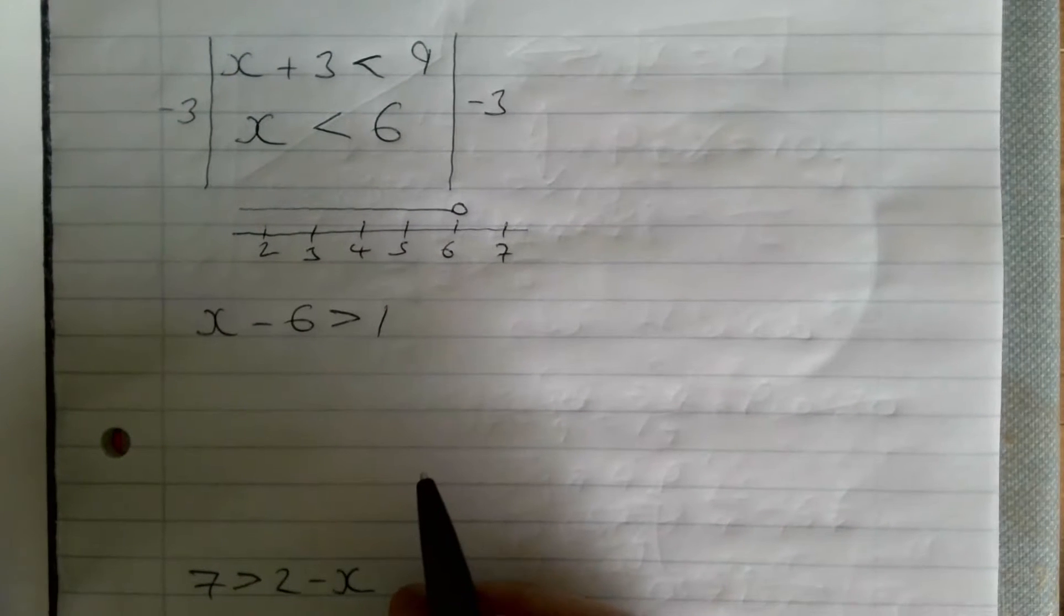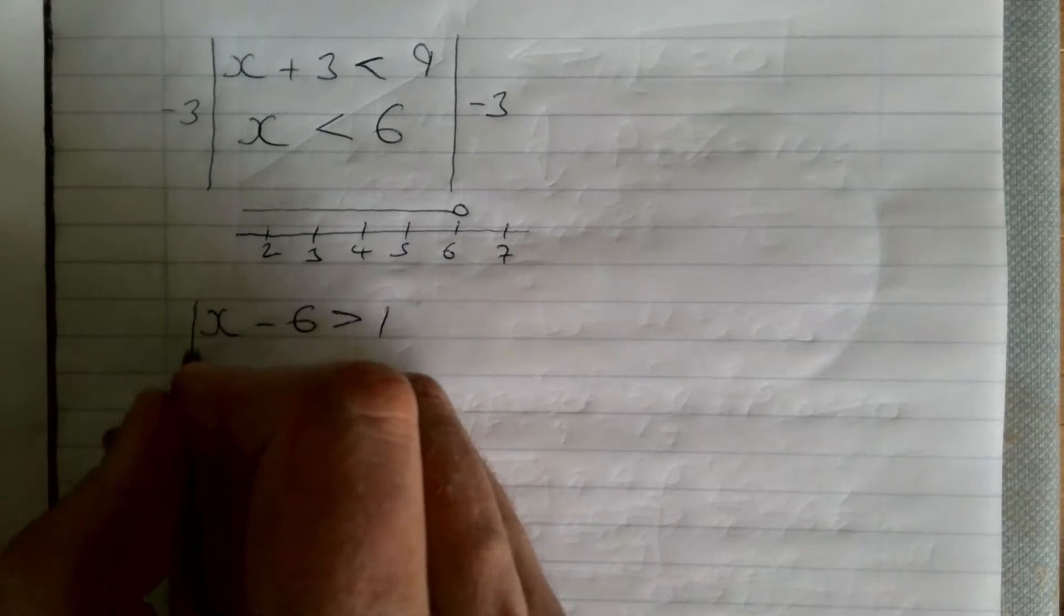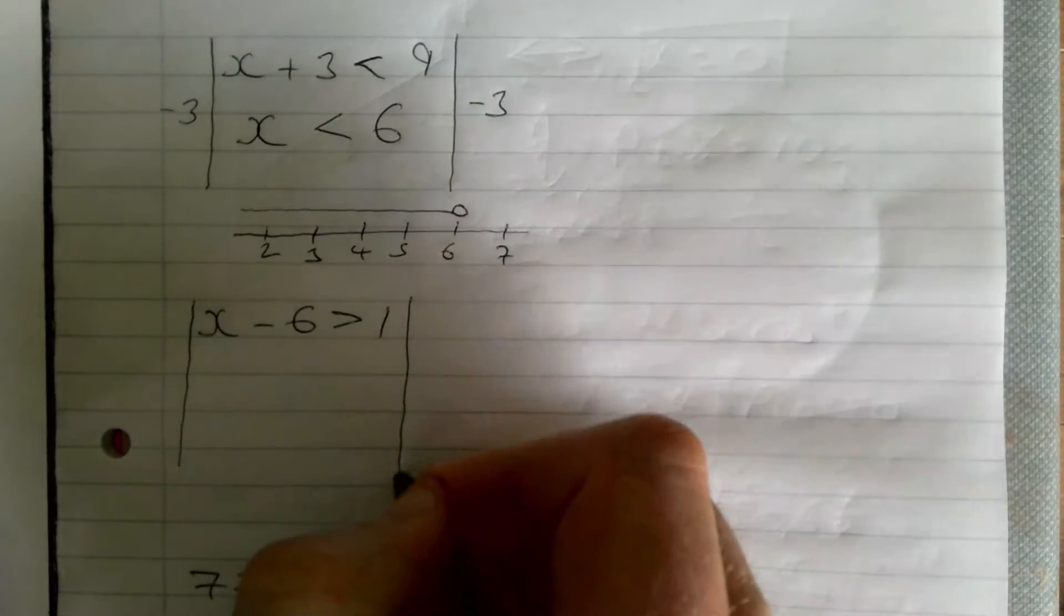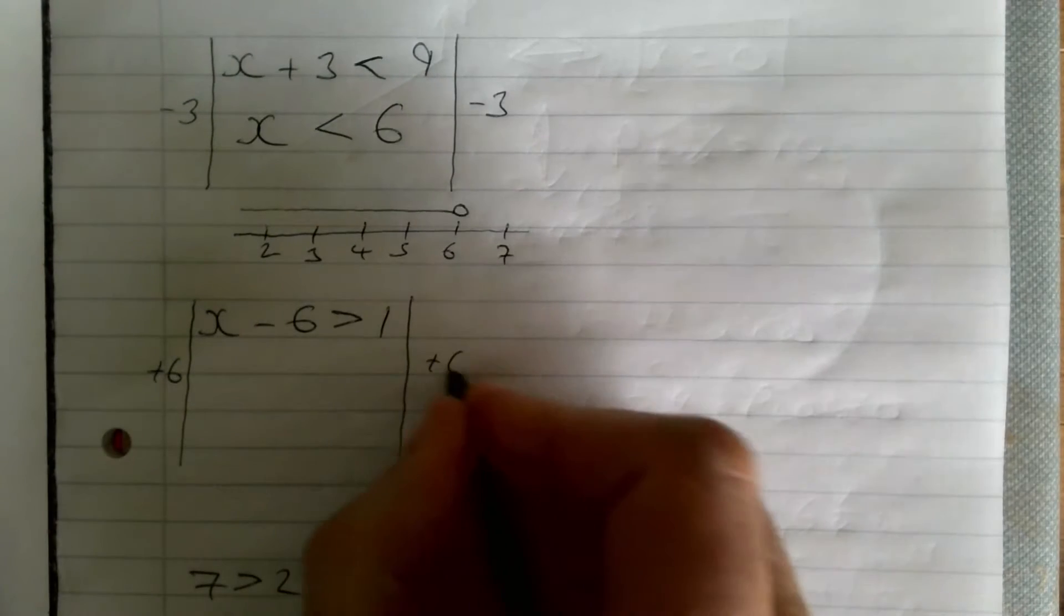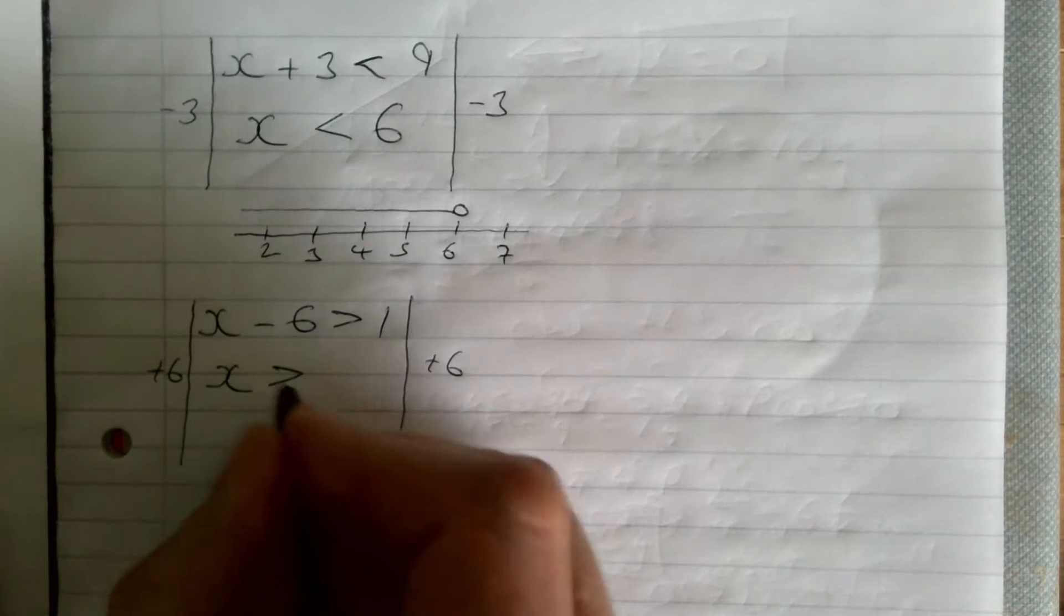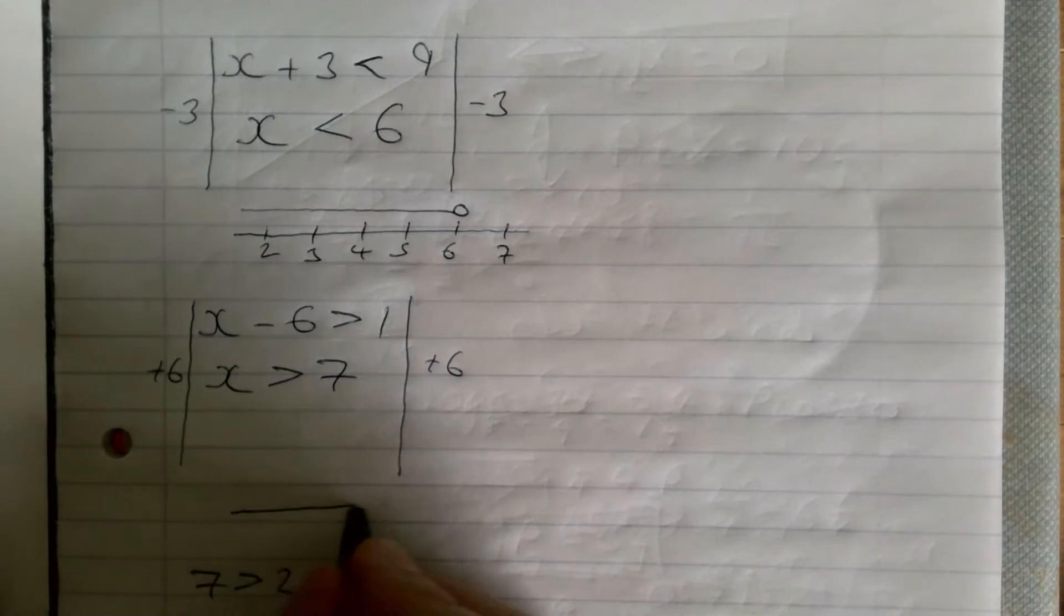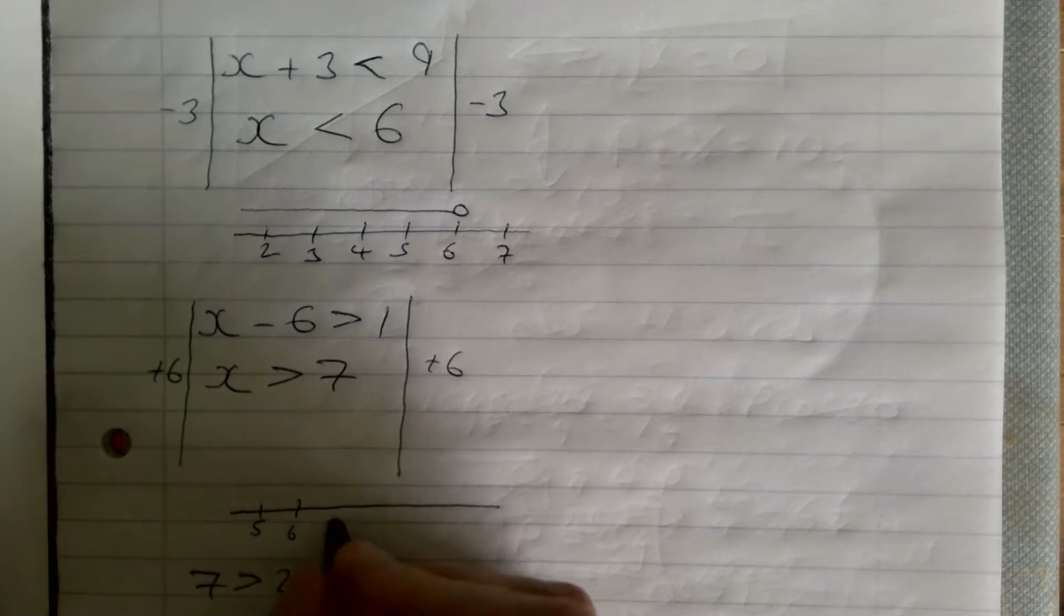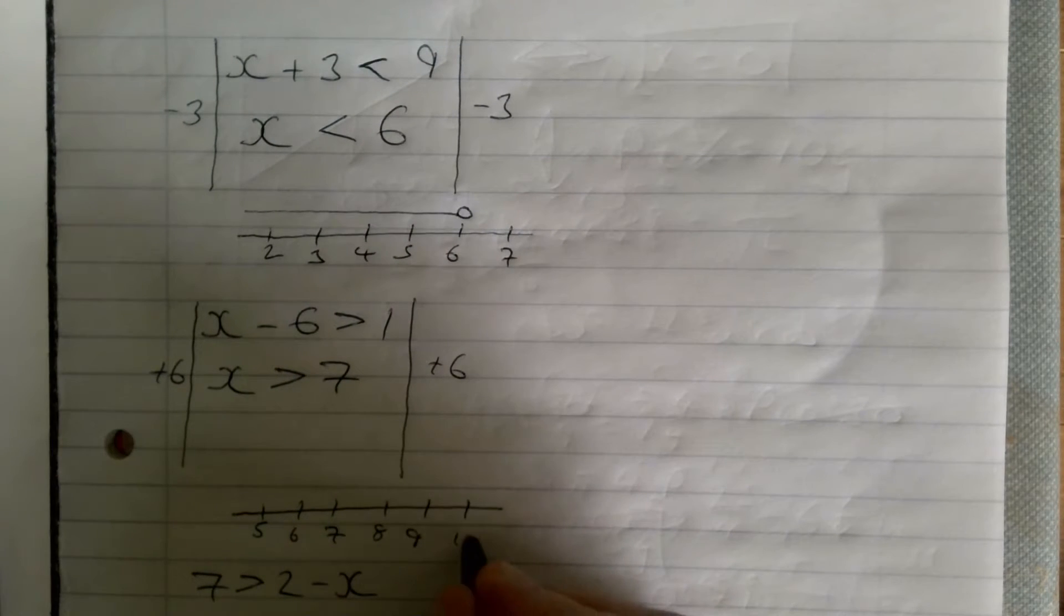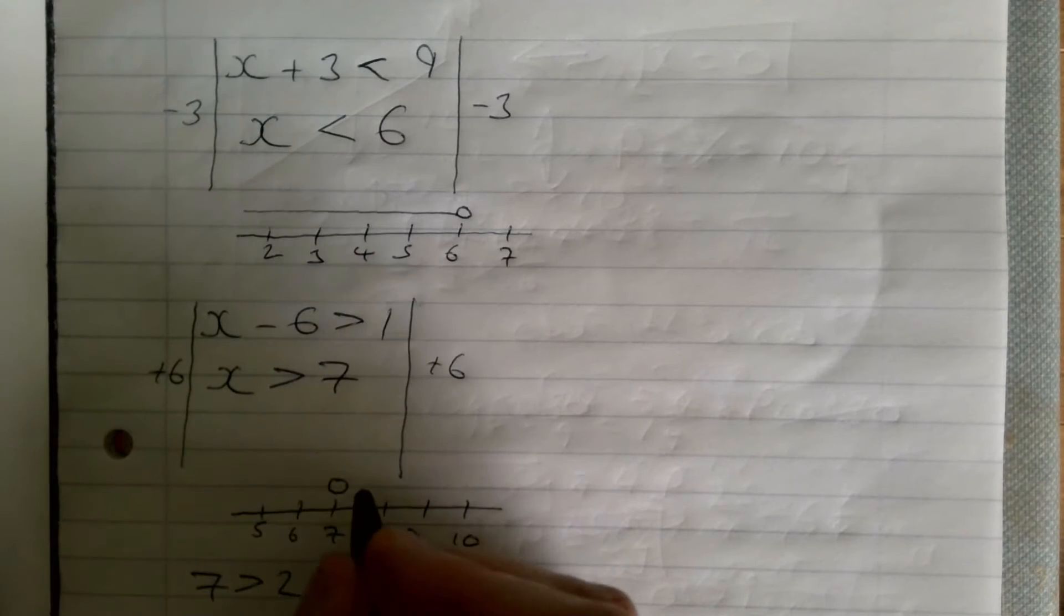Let's take a look at example two: x minus 6 is greater than 1. Same as before, we want to add 6 to both sides, so we're going to get x is greater than 7. Again on the number line, 5, 6, 7, 8, 9, 10. Do a circle at the 7 and we want where it's greater than 7.